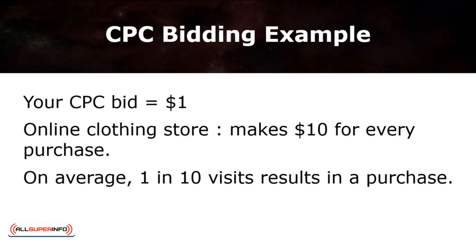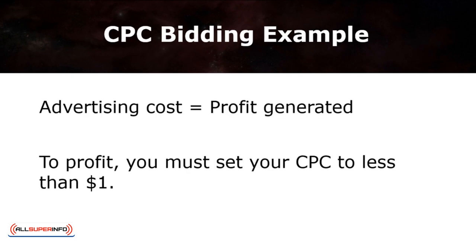For example, let's say you've set your CPC bid to a dollar. You own an online clothing line shop, and you make $10 from every purchase, and on average, 1 in 10 visits results in a purchase. As a result, you only break even as your advertising cost is equal to the profit you generate. Therefore, to gain profit, your CPC should cost you less than a dollar. Hence, choose a bid amount that works for you and the campaign that you're aiming for.